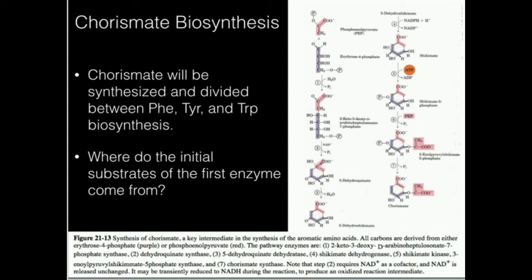Chorismate is going to be synthesized through two molecules that are just everyday things floating around the cell. In biosynthesis we take things from here and there, siphon things out of pathways, and use them to make interesting and useful molecules. To ultimately make chorismate we're going to use phosphoenolpyruvate, which is from glycolysis — a very high energy molecule — and erythrose-4-phosphate, which is from the pentose phosphate pathway.